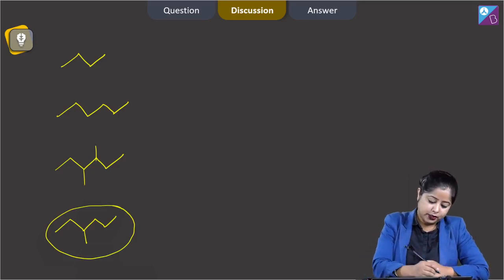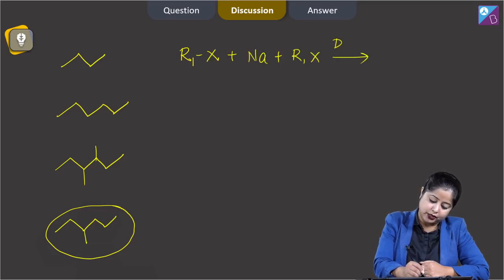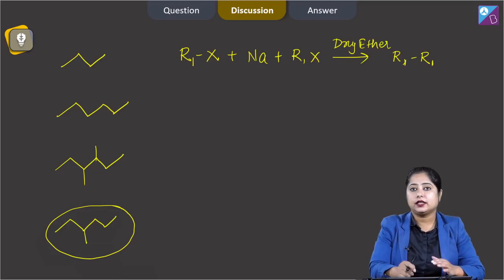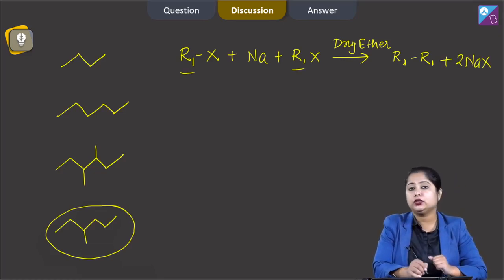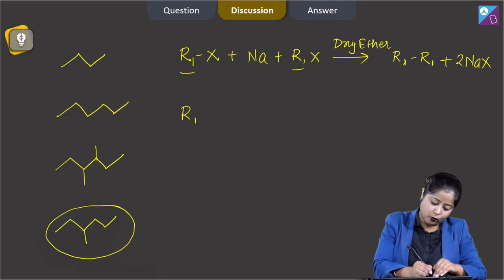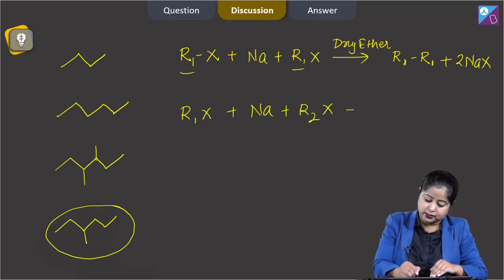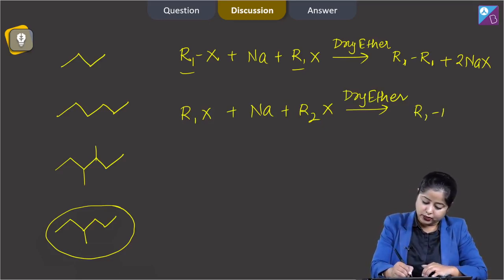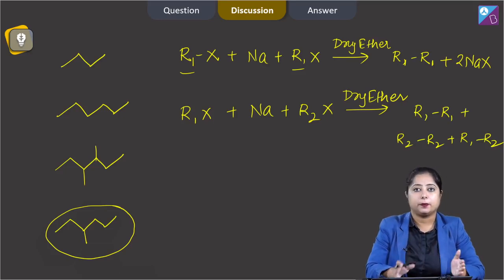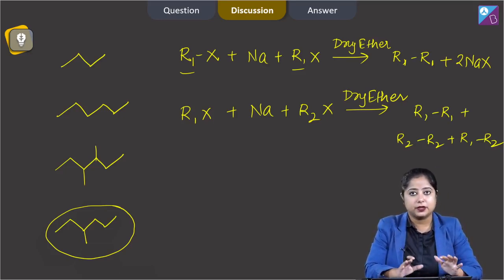In Wurtz reaction, an alkyl halide R₁X reacts with sodium and another molecule of alkyl halide in the presence of dry ether to give an alkane with a higher number of carbon atoms, with 2NaX as the side product. If the two alkyl groups are not the same — say R₁X + Na + R₂X in dry ether — then a mixture of alkanes R₁R₁, R₂R₂, and R₁R₂ is obtained, which is difficult to separate.